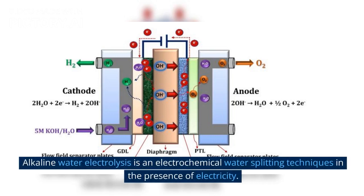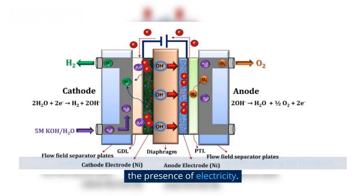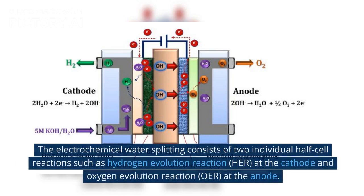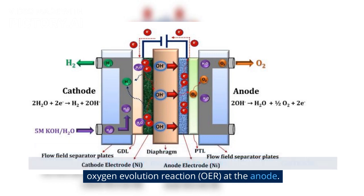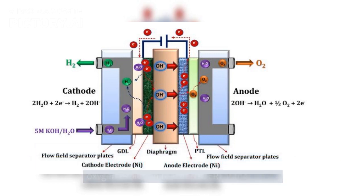Alkaline Water Electrolysis is an electrochemical water splitting technique in the presence of electricity. The electrochemical water splitting consists of two individual half-cell reactions: the hydrogen evolution reaction (HER) at the cathode, and the oxygen evolution reaction (OER) at the anode.